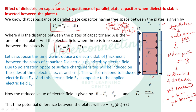Due to these induced surface charges, a new electric field E_p is developed inside the dielectric. The direction of E_p is opposite to the direction of the applied electric field. So the reduced value of electric field inside the dielectric is E equal to E₀ minus E_p — the applied electric field has been reduced by the factor E_p. Let surface charge density induced be sigma_p: minus sigma_p on the left side and plus sigma_p on the right side.